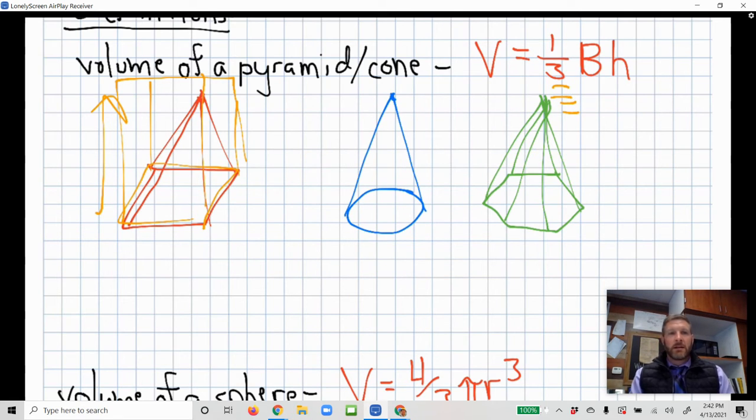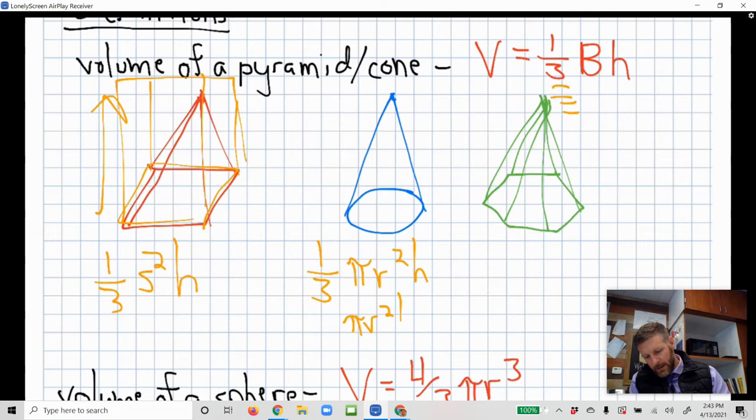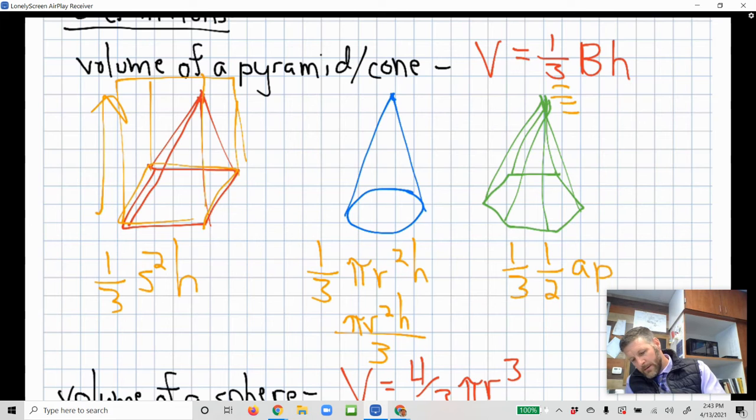So all you have to really take into account is, like in 10.6, what kind of a base are you dealing with? If you have a square like this, you're going to just have one third and then your base, in this case, would be side squared times the height. Or if you have a circular cone, you're just going to have one third times pi r squared times the height. Sometimes that will be written simply as pi r squared h over three. You can see that's basically the same thing, dividing by three or multiplying by a third. And then if you have something more complicated like a regular polygon over here, you're going to have one third times one half a p h, with that one half a p being your formula for the base of a regular polygon. And again, you could simplify that. You don't need to, but one sixth a p h.